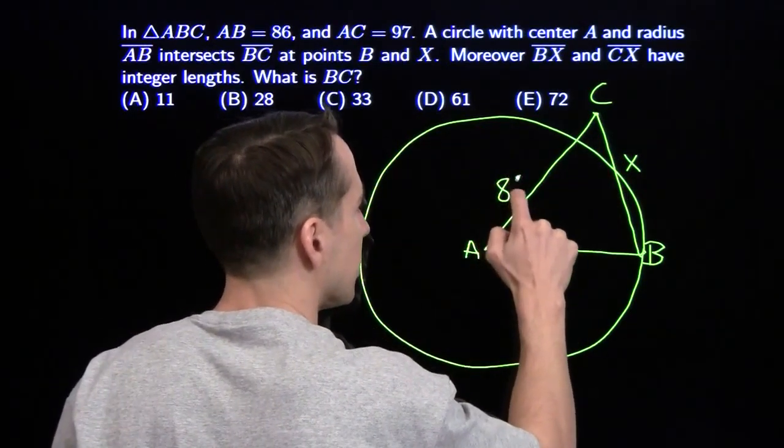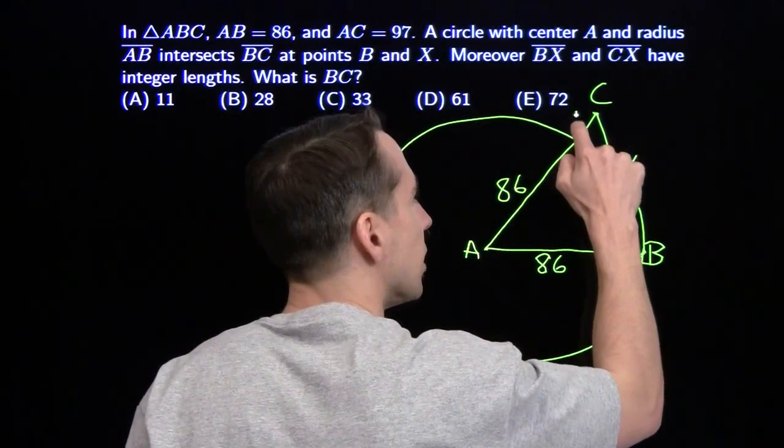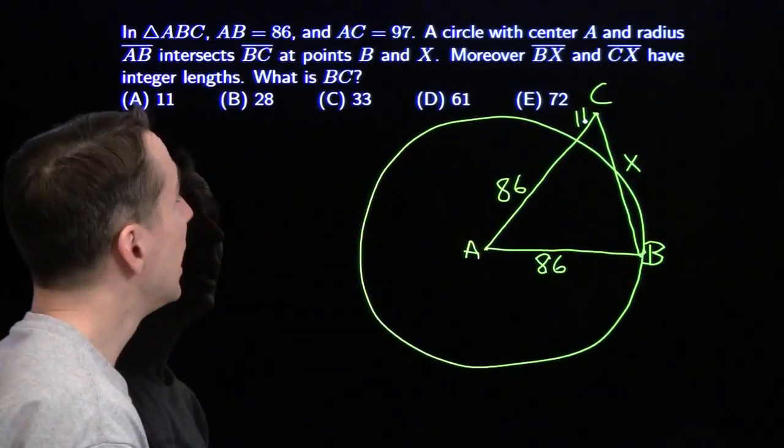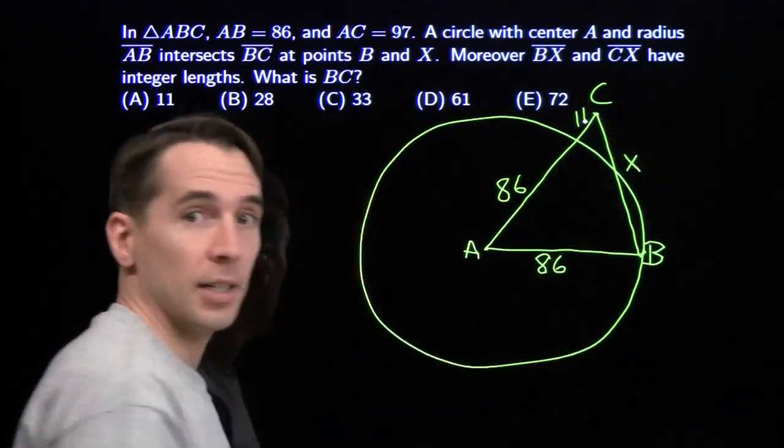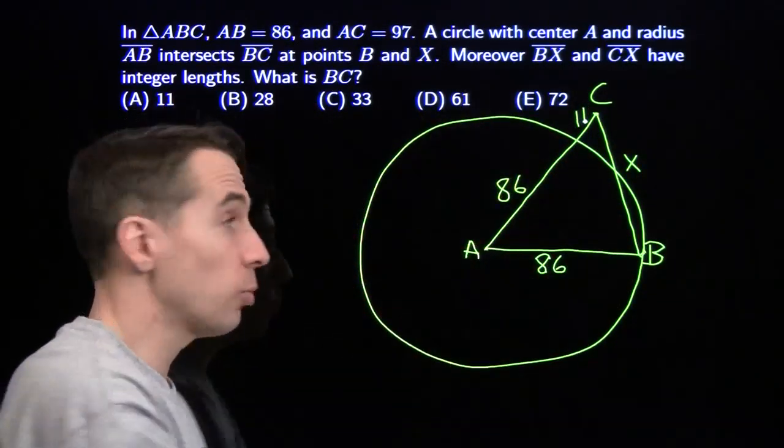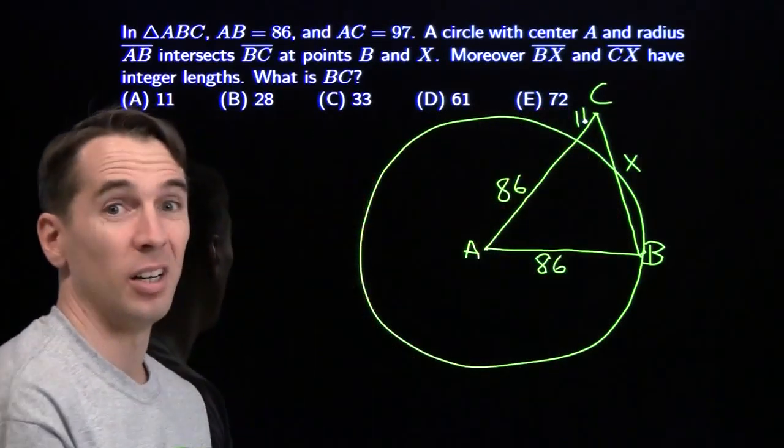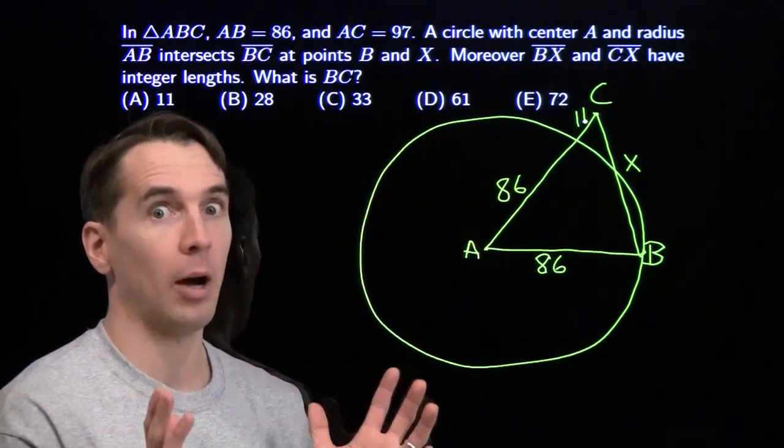We know that this is 86 because it's a radius, and this piece out here is 97 minus 86, that's 11. Now, let's see, we're looking for BC, we're looking for the length of the secant out here. We've got a bunch of lengths, we're looking for the length of a secant out here. This problem just screams power of a point to me.